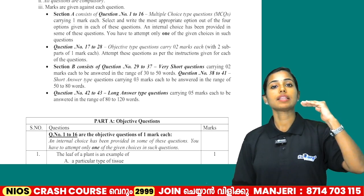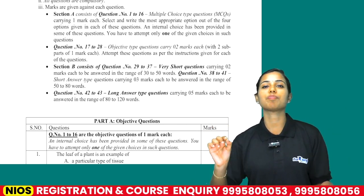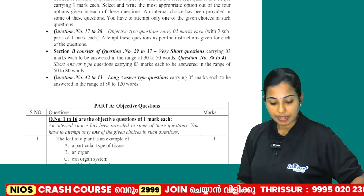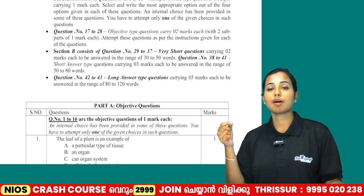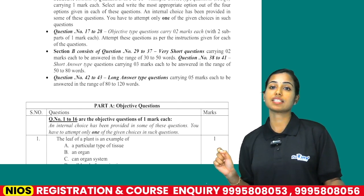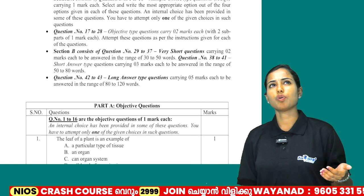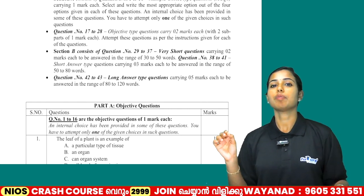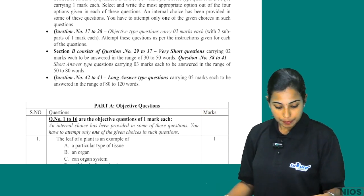MCQ — here is a question with 4 options. You learn the products and options, and you start connecting. You answer by relating — you have 4 options and from those 4 options you relate and choose the correct answer.